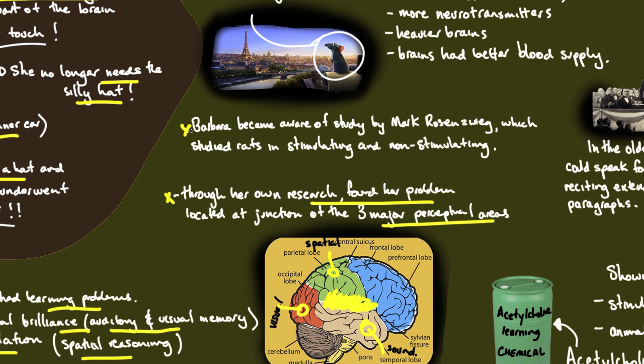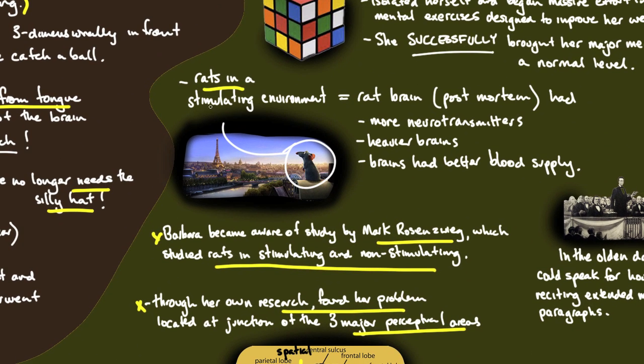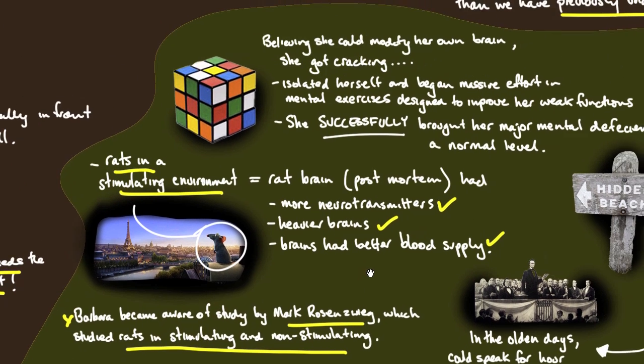Barbara became aware of a study by Mark Rosenzweig who had studied rats in stimulating and non-stimulating environments. He found that rats in stimulating environments had, in post-mortem studies, more neurotransmitters, heavier brains, and much better blood supply.